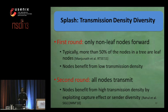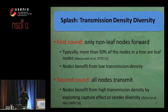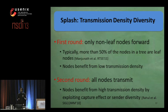Accordingly, in SPLASH we have two rounds of dissemination, each disseminating the full data object. In the first round, only non-leaf nodes participate in forwarding received packets.